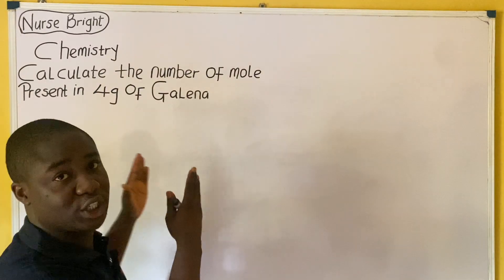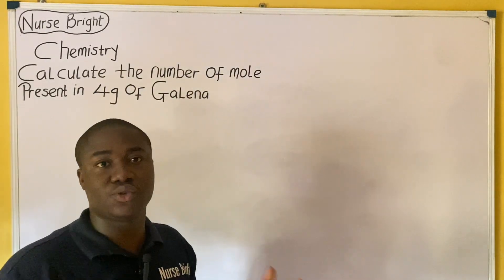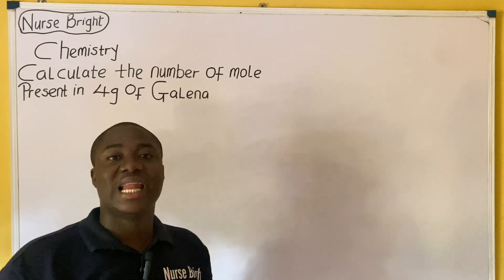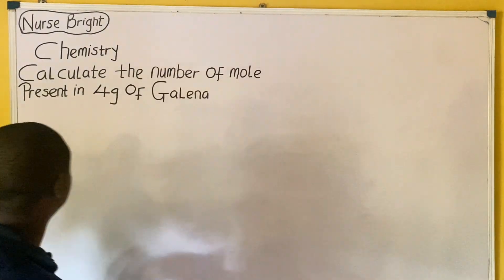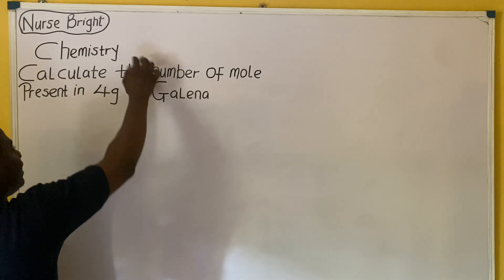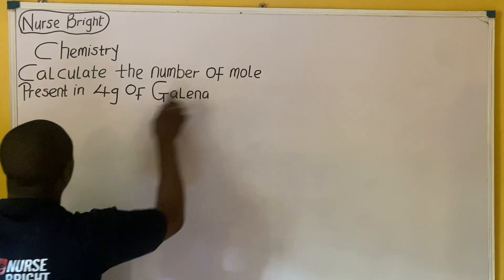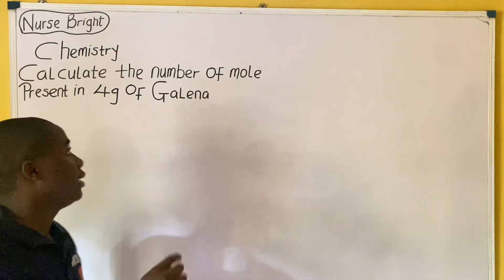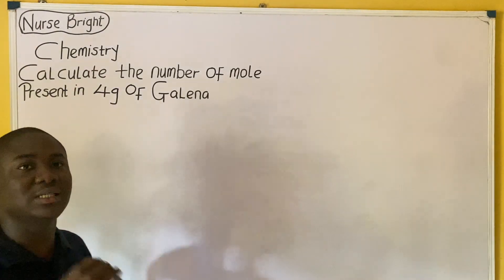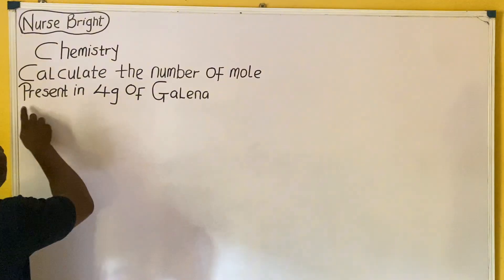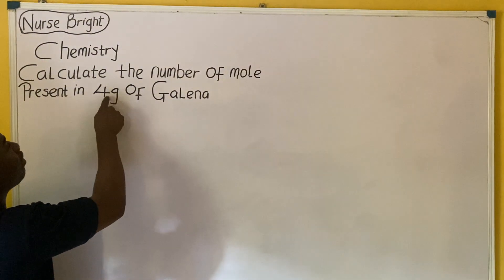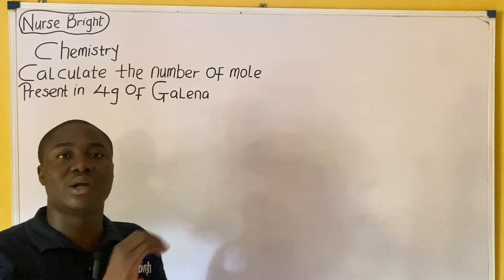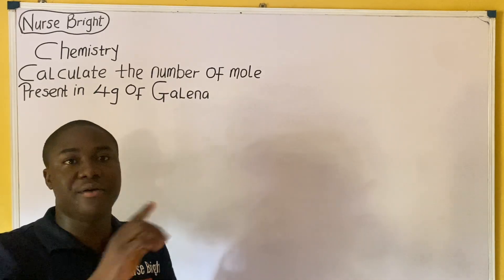You came across this question in your chemistry exam. How will you solve it? It is very easy. Let's solve together. The question says: calculate the number of moles present in 4 grams — this G here simply means grams — of galena. This question is extremely very easy.